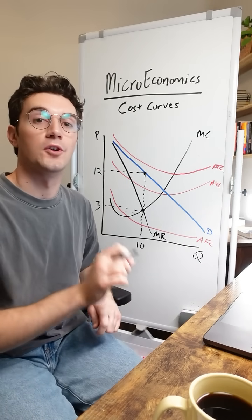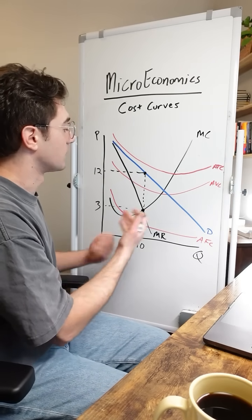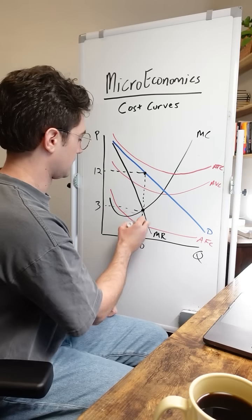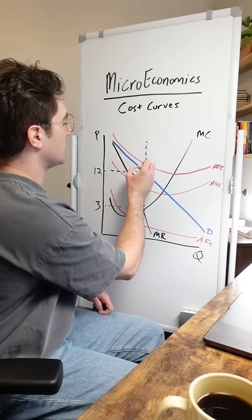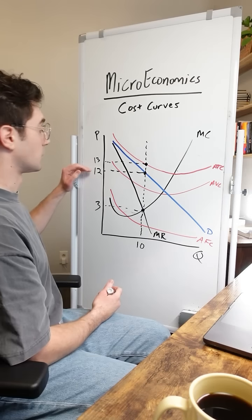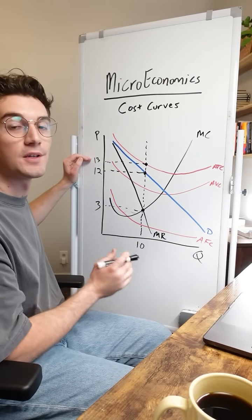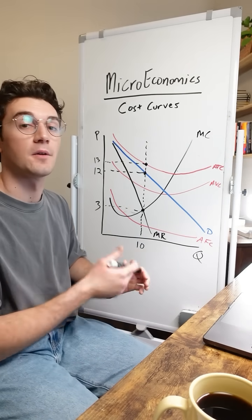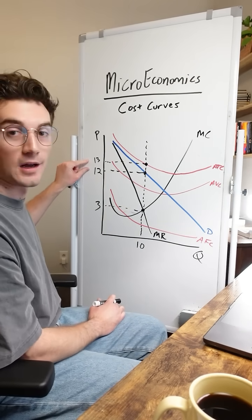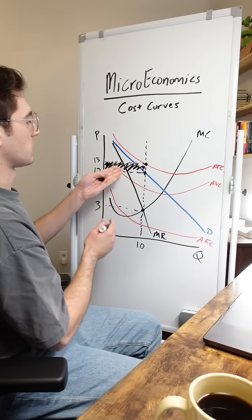All right. So this firm is going to sell 10 units at 12 bucks a pop. From here to determine if they're incurring a loss, we need to see where the average total cost curve lies vertically from 10 units. So I continue this line up and you can see that we intersect ATC right here. We'll say at 13, 13 bucks. So we're selling each unit for 12 bucks, but the average total cost per unit is 13. So pretty simple to tell here that we are incurring a $1 loss per unit equating to this rectangle right here. This is our loss rectangle.